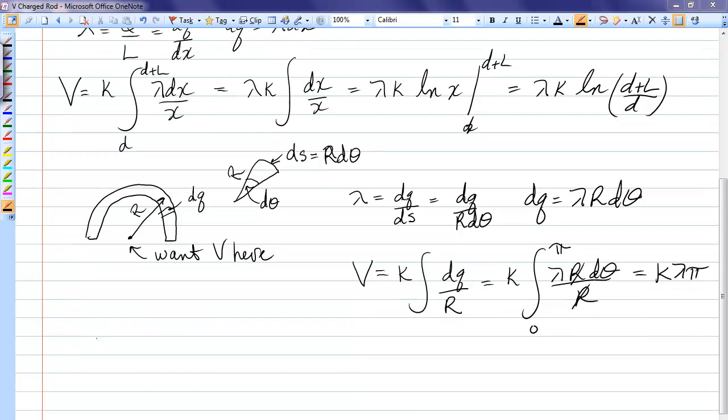Now something I forgot to do in both of these examples is replace lambda with q over l, because lambda was not a value that was given in my problem. So for the first one, I have to replace lambda with q over l. So if I go back to the straight rod, the answer should be k q over l ln of d plus l over d, and that makes sure that my answer only has letters that are given in the problem.